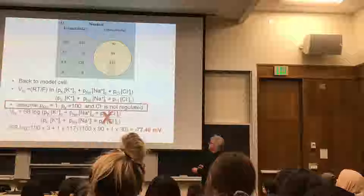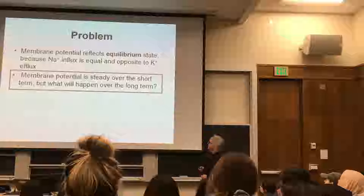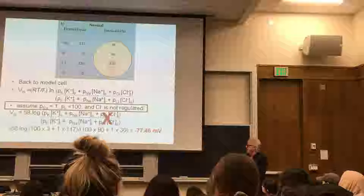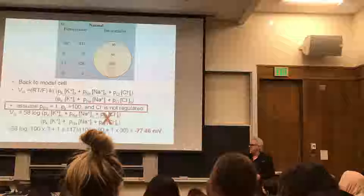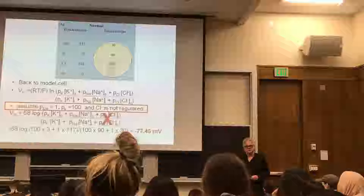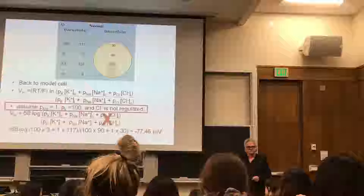So we can sort of cross chloride out. The other thing besides taking into account all of the relevant ions is that this equation also takes into account the relative permeability of the membrane to those different ions. The permeability for potassium is 10 to 100 times greater than it is for sodium. And this explains why the membrane potential is much closer to the potassium equilibrium potential in the minus 70s than it is to the sodium equilibrium potential, which is plus 55 mV.